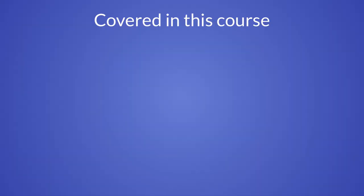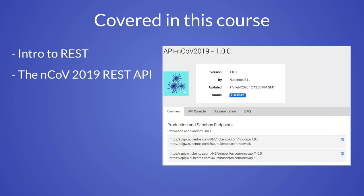Here's a list of topics covered in this crash course. We will start with a short introduction to REST — what it is and how it works. Then we will see an overview of the NCOV 2019 health API, which is used to fetch statistics about the coronavirus outbreak around the world.